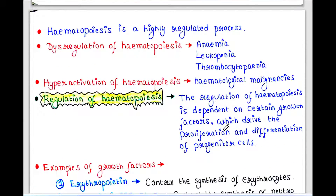Hematopoiesis is a highly regulated process. Dysregulation of hematopoiesis causes anemia, leukopenia, and thrombocytopenia. Hyperactivation of hematopoiesis causes hematological malignancies.